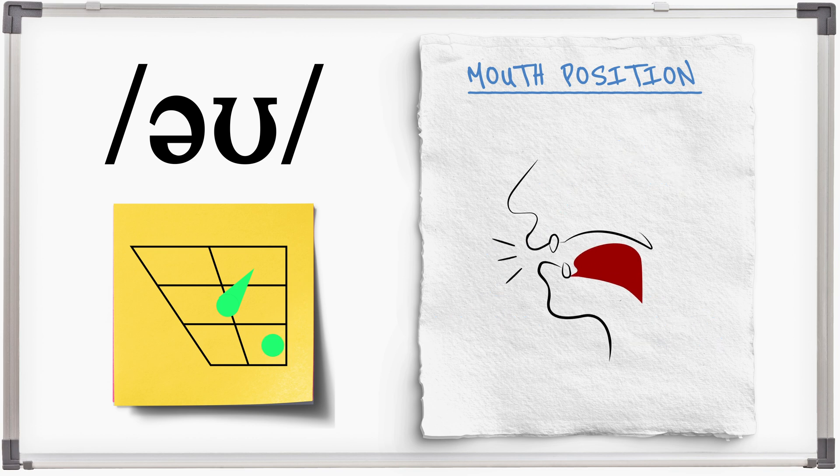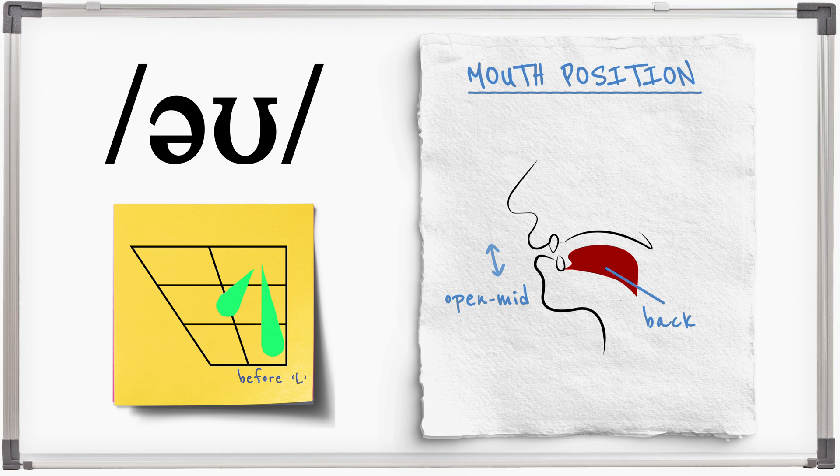The sound is O before dark L. The starting position is more open, further back and rounded, O.